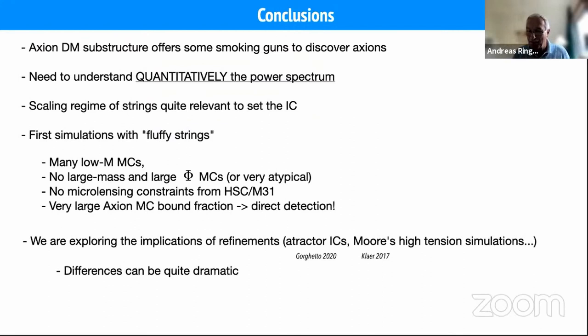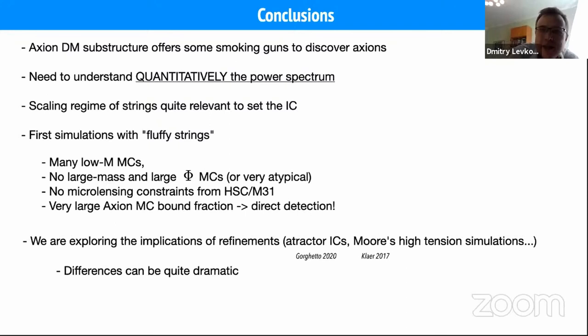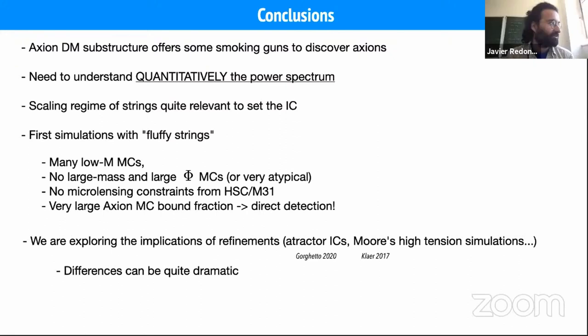Thank you very much Javi, for this nice presentation and these illuminating movies. The first question is from Dima Levkov: you observe in simulations that the axitons are stable as long as the axion mass increases, and they become suddenly unstable when the axion mass is constant. Do you have a theoretical explanation for that?